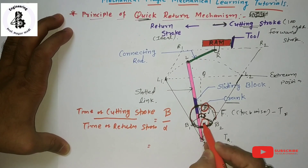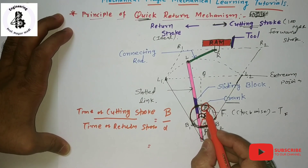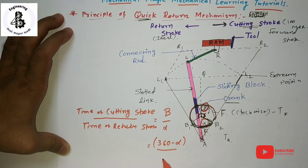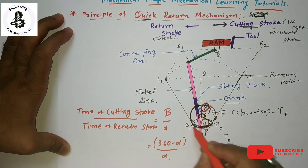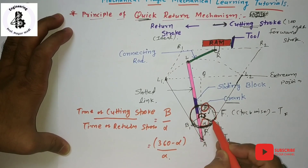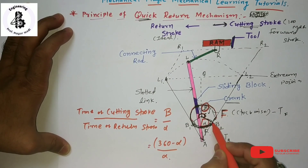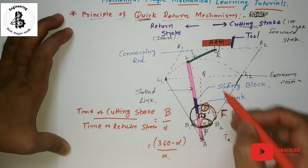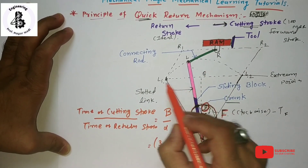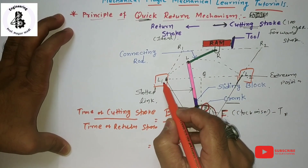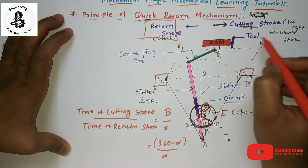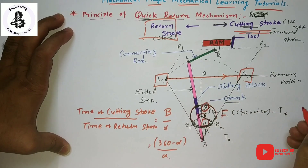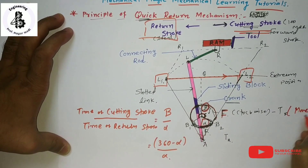Since one complete rotation is 360 degrees, the forward stroke angle beta equals 360 minus alpha. So the relation becomes: time of cutting stroke divided by time of return stroke equals (360 minus alpha) divided by alpha. This is the relationship for one complete rotation — showing how much time is taken for the forward stroke versus the return stroke.